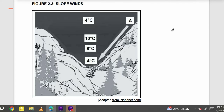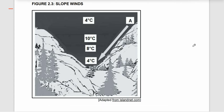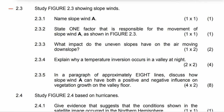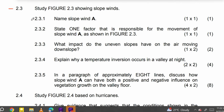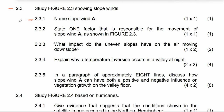We have slope winds here — take a moment to analyze the diagram. You can see temperatures shown: 4 degrees Celsius, 10 degrees Celsius, 8 degrees Celsius, and 40 degrees Celsius. We have wind A that is blowing downwards. Keep in mind this is occurring at night.